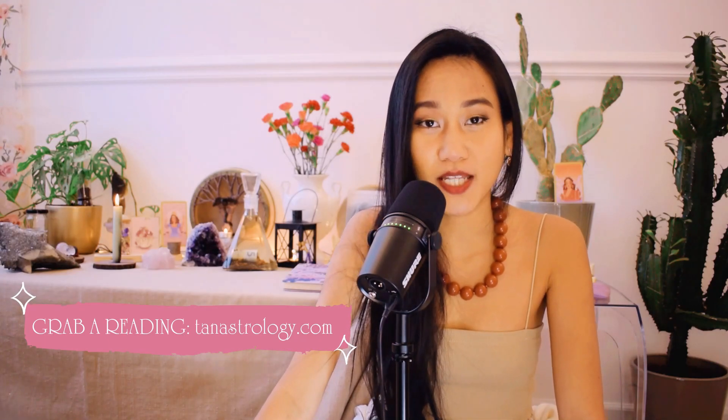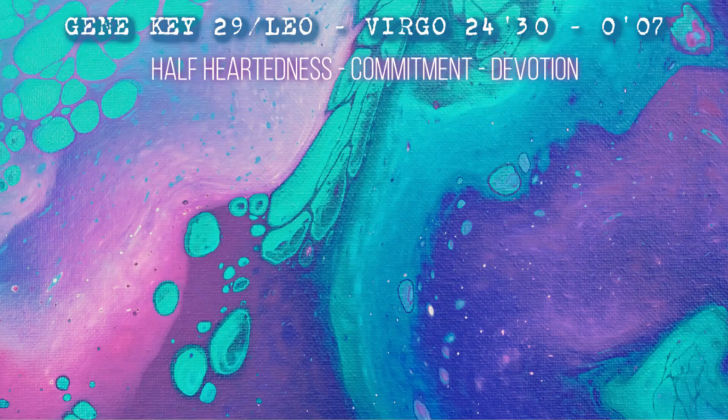Today we're going to be looking at Gene Key 29, or Human Design Key 29, which is the zodiac sign of Leo. This Gene Key spans a Leo-Virgo cusp, from 20-30 degrees of Leo to 0.07 degrees of Virgo, but it's mostly Leo. It covers six degrees in the sun of Leo and just barely one degree inside of Virgo.